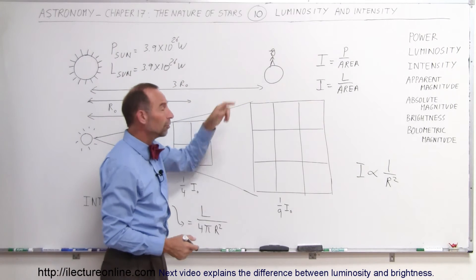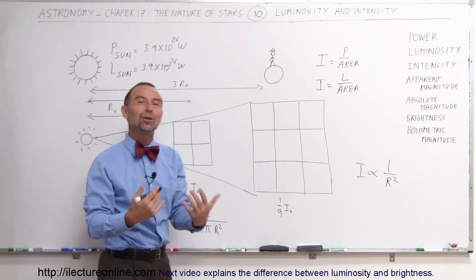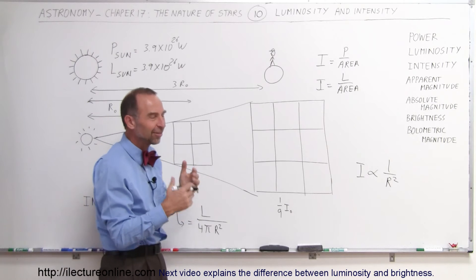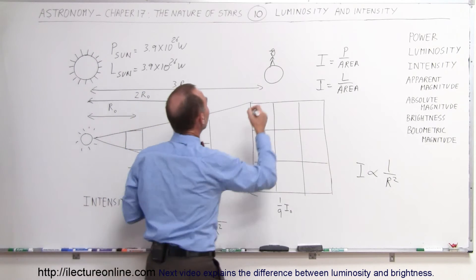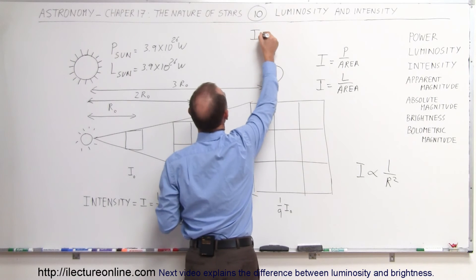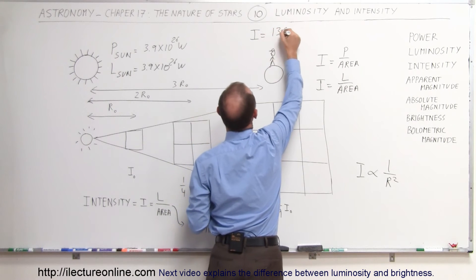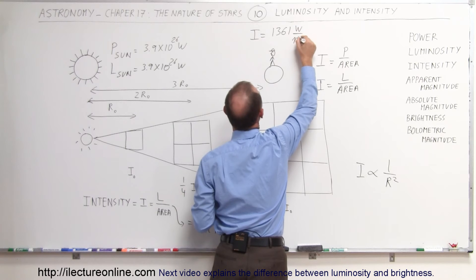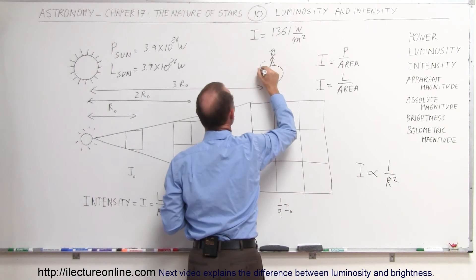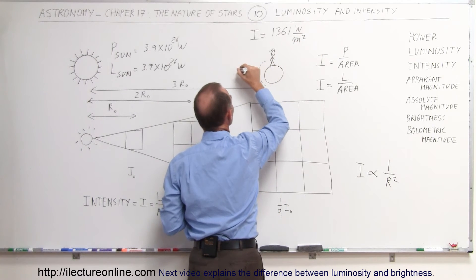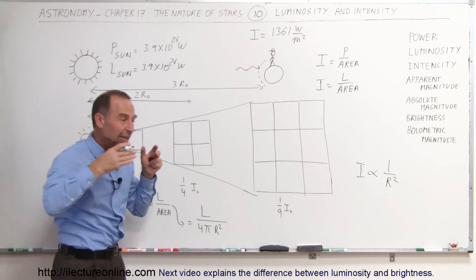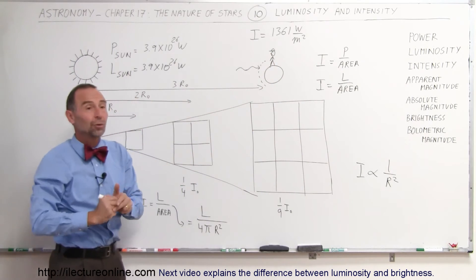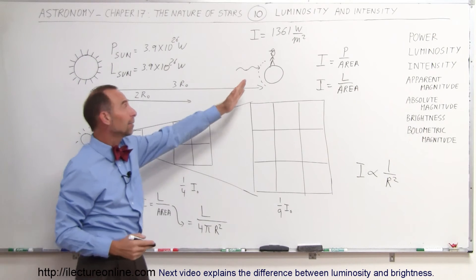By the time the light reaches the Earth, or I should say all of the energy reaches the Earth, again, we think of it as light, but in essence it's light, UV and infrared all combined, the intensity of all that energy is around 1361 watts per square meter. Now, that's, of course, when it reaches the upper end of the atmosphere.